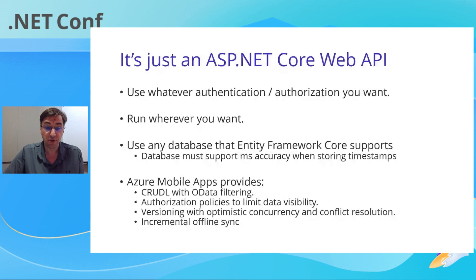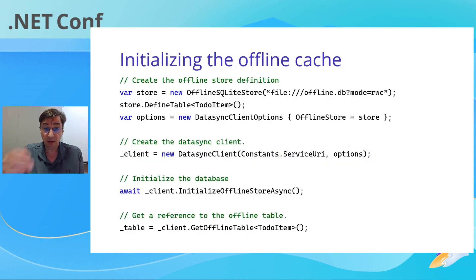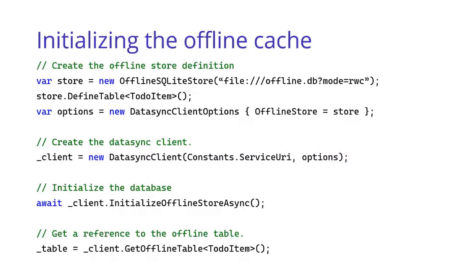So let's talk about how to do offline sync with .NET MAUI. Normally, you will establish the SQLite store during that first page. If you imagine you're starting a mobile application, there's usually a screen with a spinner that says 'I'm initializing' before it gets to the main application. The work to do the offline cache and the initial synchronization is generally done within that page. It's all async, and it comes up with four steps. First of all, you're going to create a SQLite store, and that store can live wherever it needs to on your application.